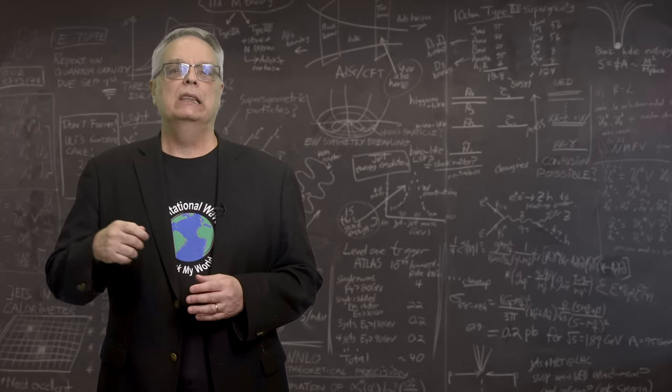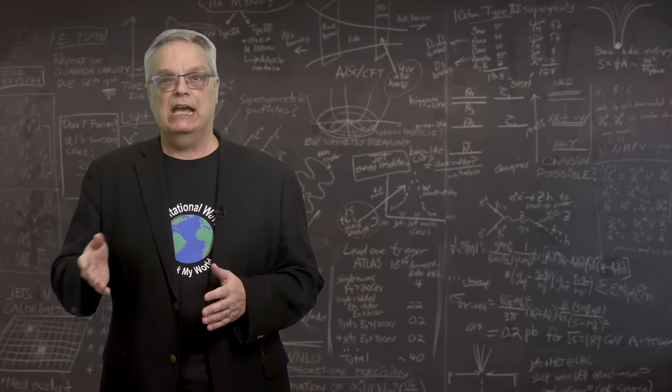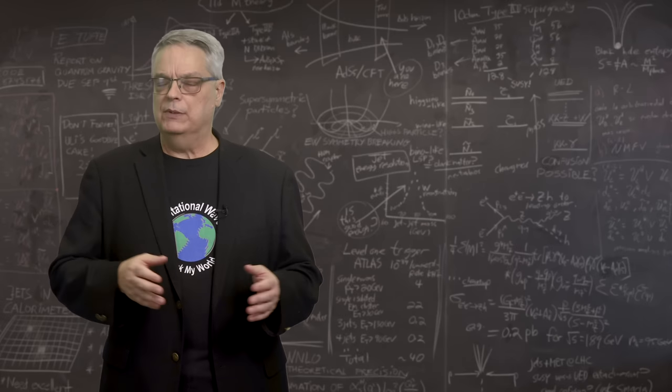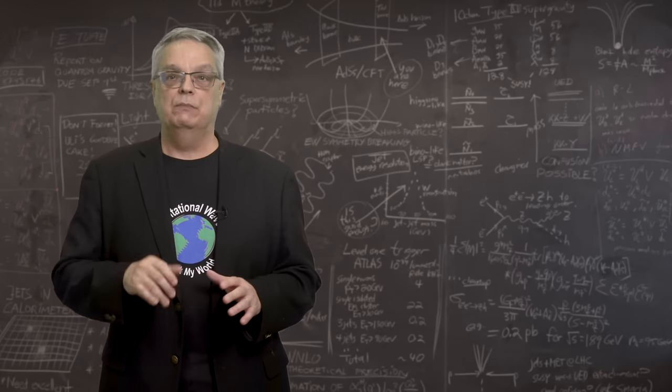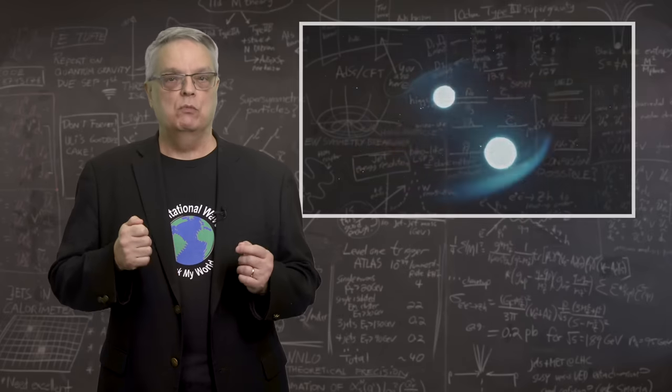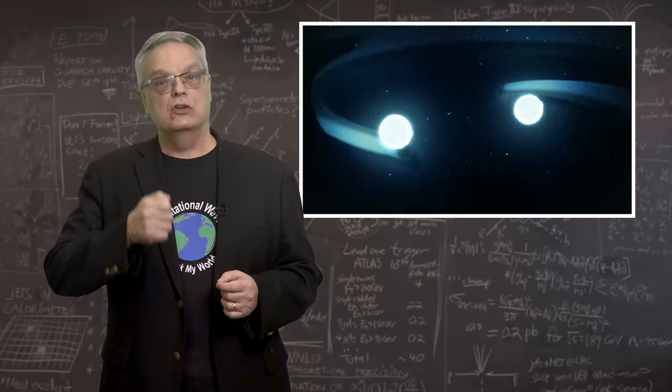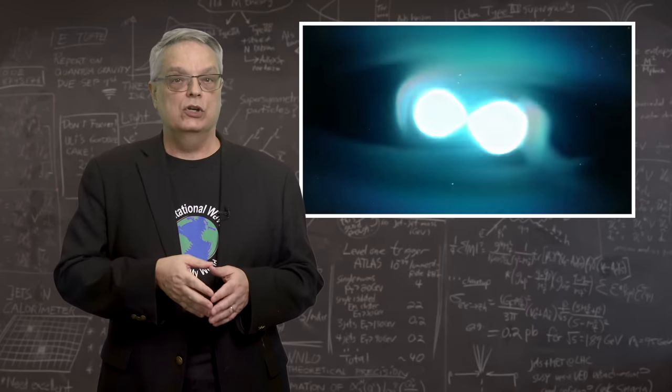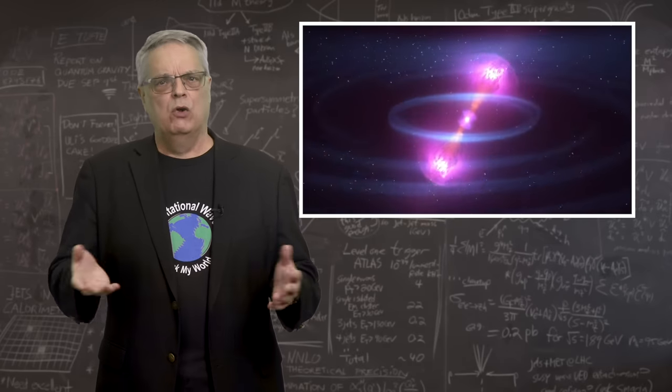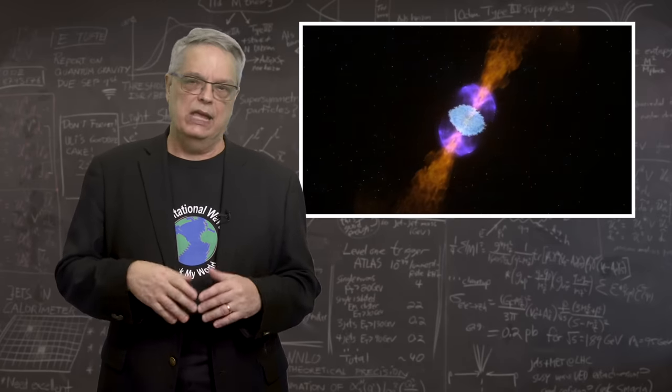Now, you might be wondering why light arrived about two seconds after gravity, but the answer is probably simple. Gravitational radiation is emitted all the time, but it's biggest when massive objects are moving very fast. That occurs just before the neutron stars collide. Then the collision occurs and the light is emitted. Qualitatively, at least, that tiny delay is expected.